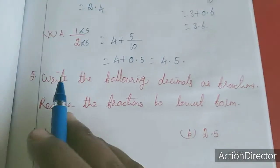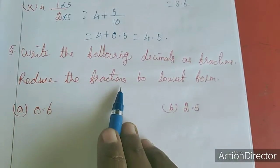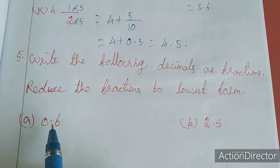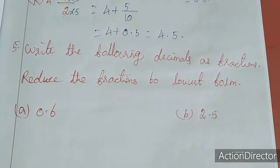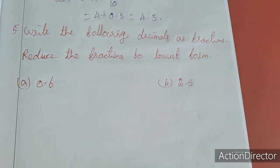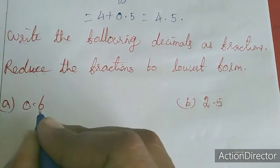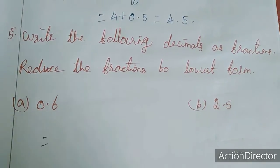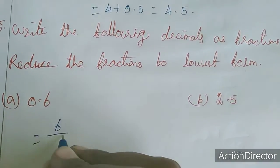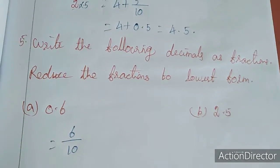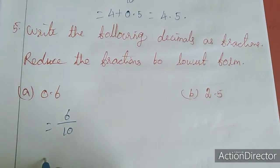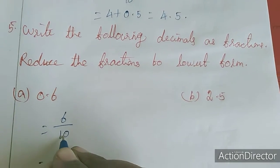Now 5th sum: write the following decimals as fractions, reduce the fraction to lowest form. Here it is decimal, convert to fraction in lowest form. One digit after dot means denominator is 10, 2 digits means 100, 3 digits means 1000.